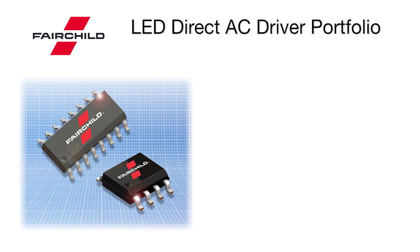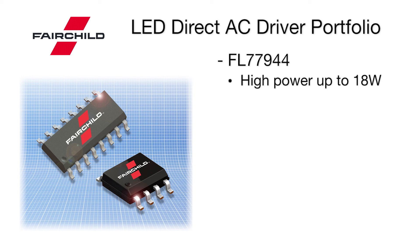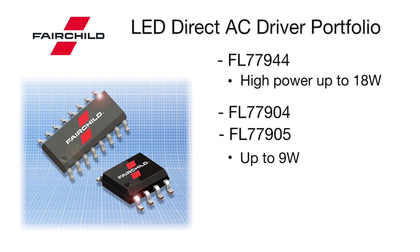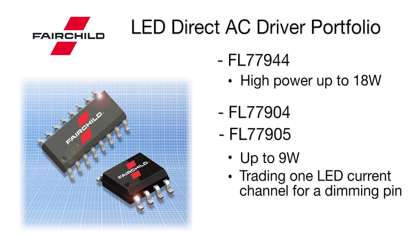Here's Fairchild's direct AC LED driver portfolio. We offer a family of three products. The FL77944 is our higher power product that offers full dimming capability at a power up to 18 watts. The FL77904 and FL77905 are limited to about 9 watts each, with the FL77905 trading one LED current tap pin for a dimming pin that can be used for either analog or PWM dimming. We offer several complete reference designs. For these, along with samples and design resources, please visit our website at fairchildsemi.com/direct-AC-drive.